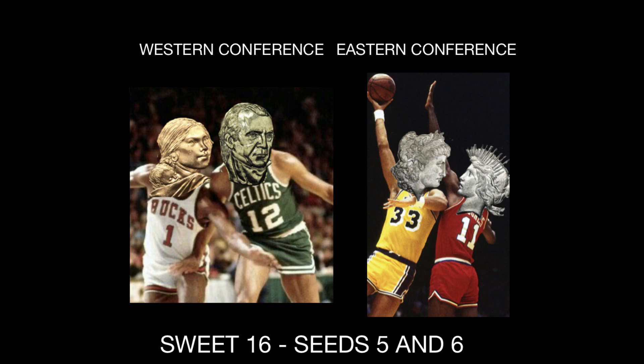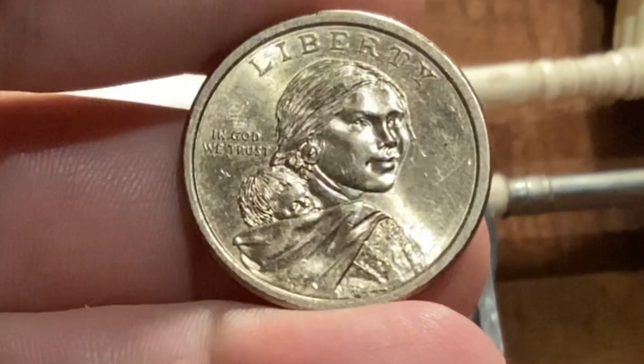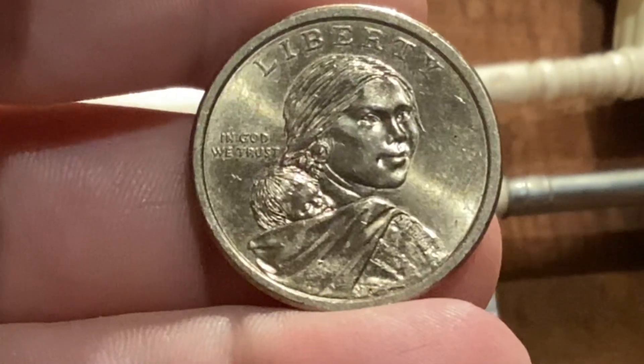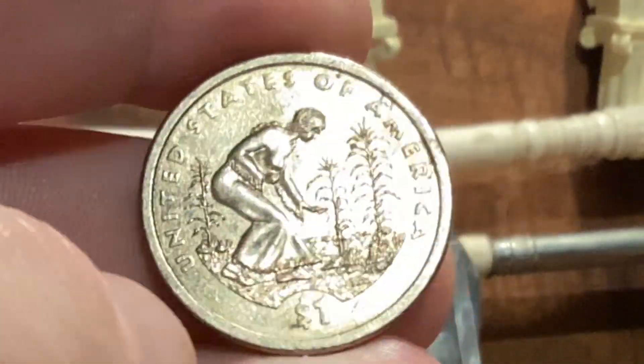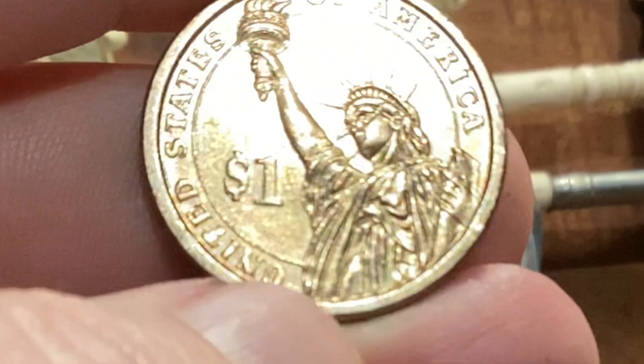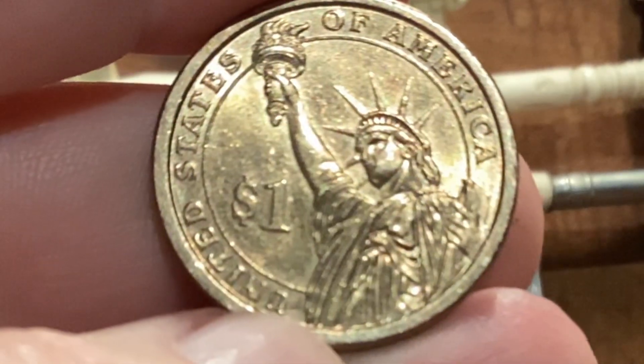Welcome to the Sweet 16 Seeds 5 and 6 competition. The winners of each one will go to next week's Elite 8. Out of the Western Conference, we have the number 5 seed: the 2009 Native American Dollar versus the 2009 Presidential Dollar.